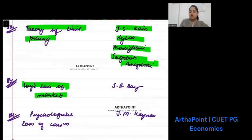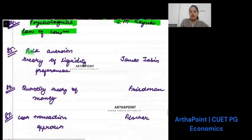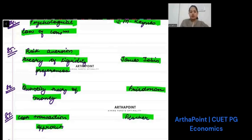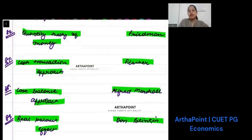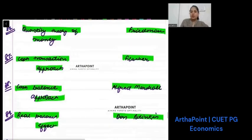Say's law of market is given by J.B. Say. Psychological law of consumption is given by J.M. Keynes. Risk aversion theory of liquidity preferences is given by James Tobin. Quantity theory of money is given by Friedman. Cash transaction approach is given by Fisher. Cash balance approach is given by Marshall. Real balance effect is given by Patinkin. These four can come in match the following.